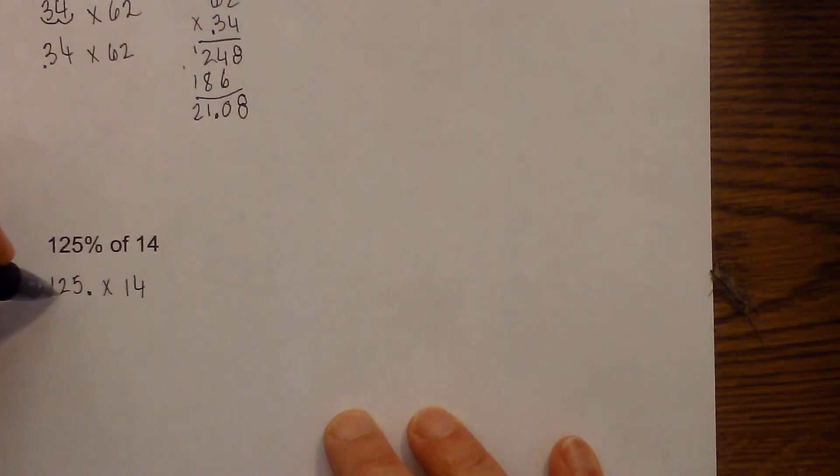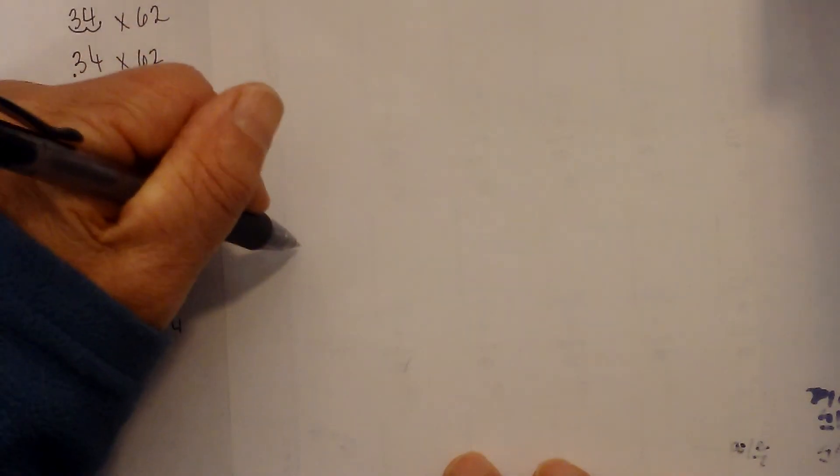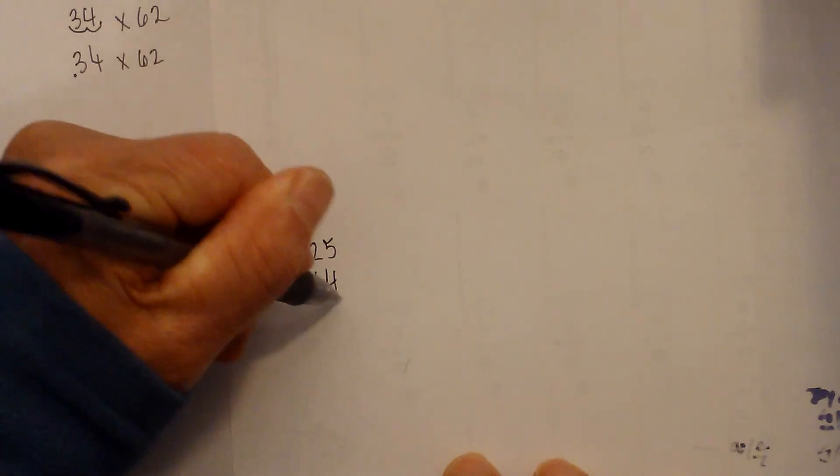Move the decimal two places to the left. So you now have 1.25 times 14. All we do is multiply. 125, 1.25 times 14.